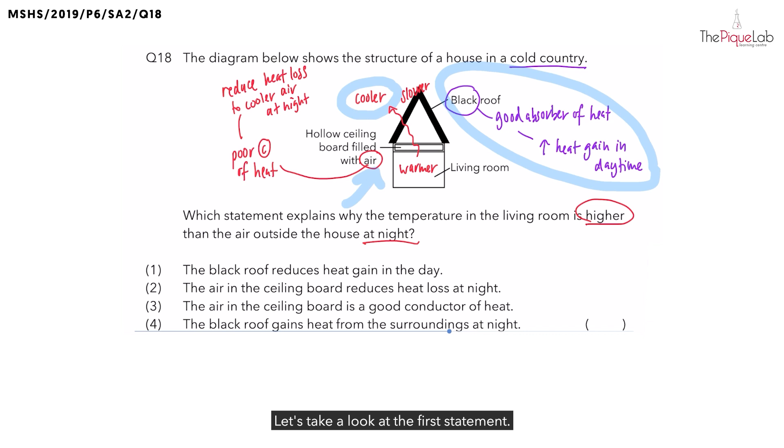Let's take a look at the first statement. The black roof reduces heat gain in the day. Is that true? We know that black is a good absorber of heat and increases heat gain from the sun in the day. So statement 1 is out.